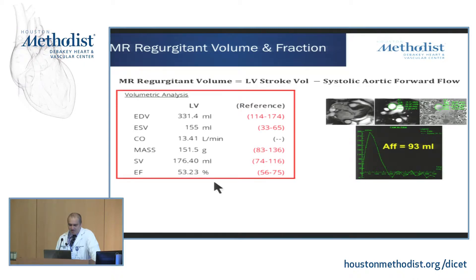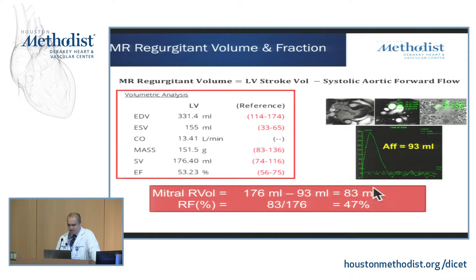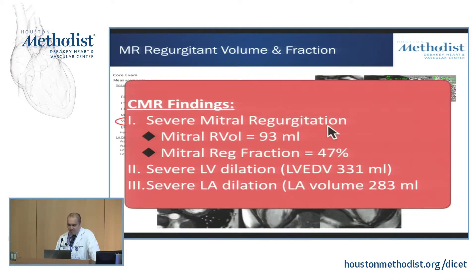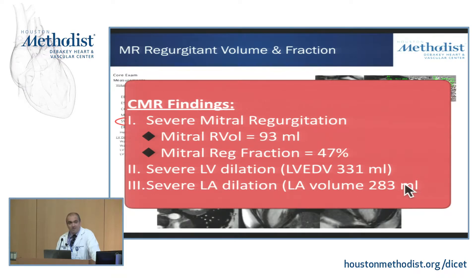In this example patient, the LV stroke volume was 176 mLs, but the amount going forward across the aortic valve was 93 mLs. So by simply doing the math, there's a huge amount of reverse flow — 83 mLs of mitral regurgitation. The regurgitant fraction is 83 divided by the mitral inflow, giving us essentially 47%. By CMR, this would clearly be a case of severe mitral regurgitation. We have severe MR with severe LV dilatation, an end-diastolic volume of 331 mLs, and by CMR a very large left atrium of 283 mLs. All of these things are concordant with severe mitral regurgitation.